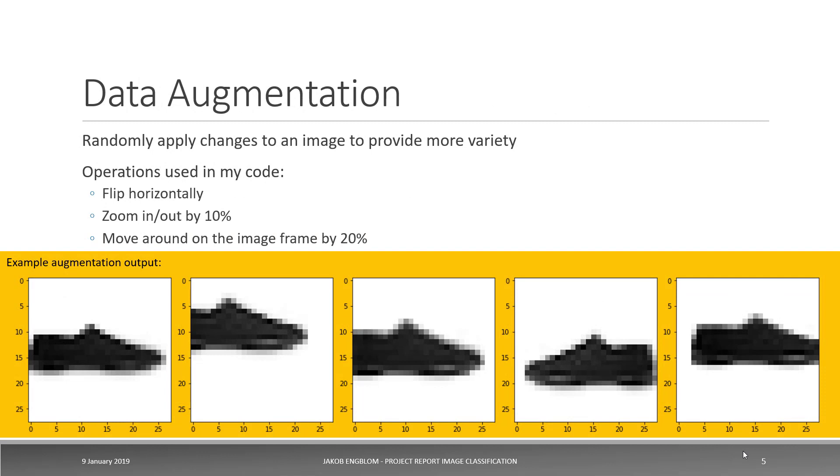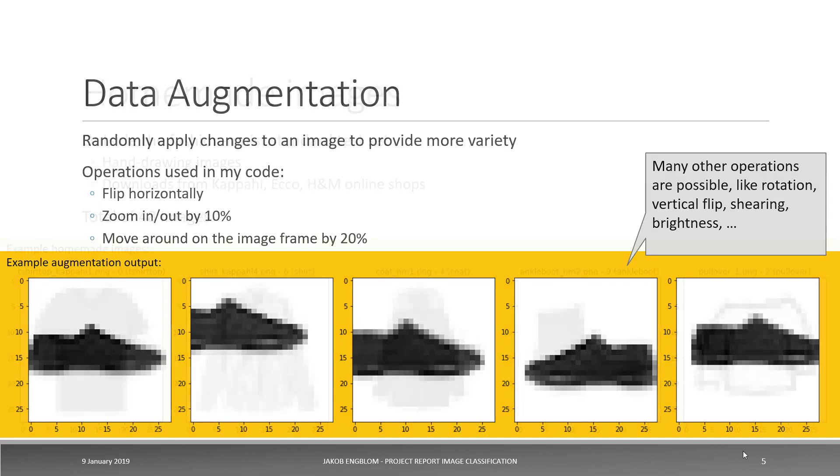In addition to the standard data, I also applied data augmentation in order to get more variety into the image set. What I did here was to randomly, for each image, create five additional variants by randomly flipping it horizontally, zooming it in or out, or moving the image around the frame a bit. There are other operations possible, but it didn't seem to add much value to this particular set of experiments. In the general case, it's probably good to use even more types of data augmentation.